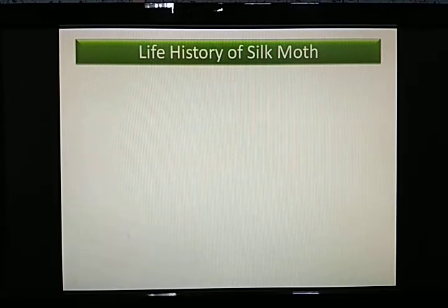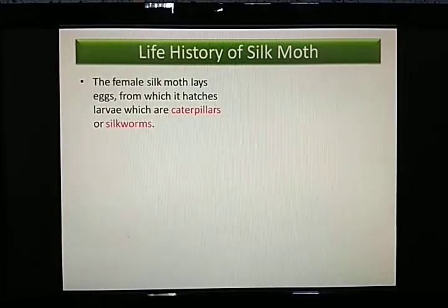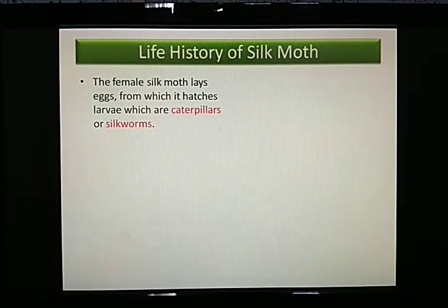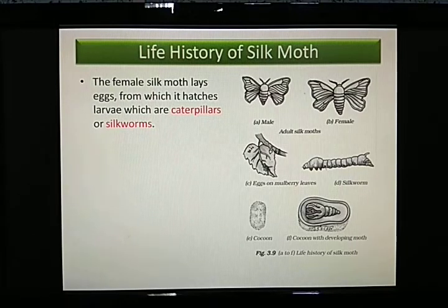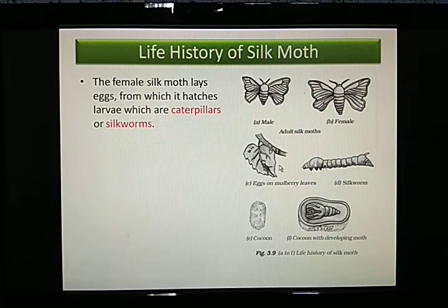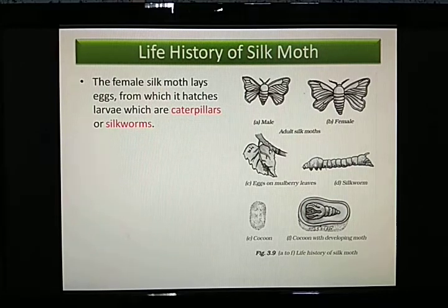The silkworm and the silk moth are the same thing — silkworm is just the larval stage. The female silk moth lays eggs, from which larvae called caterpillars or silkworms hatch. The silk moth is somewhat similar to a butterfly but is a different breed. From the diagram, you can see a male and female silk moth. After breeding, they lay eggs on the leaves of the mulberry tree, and from these eggs a caterpillar or silkworm hatches.